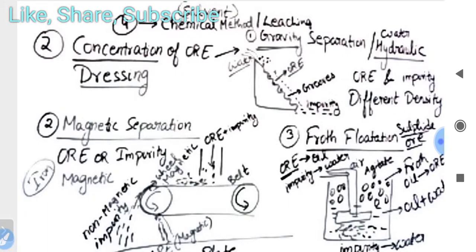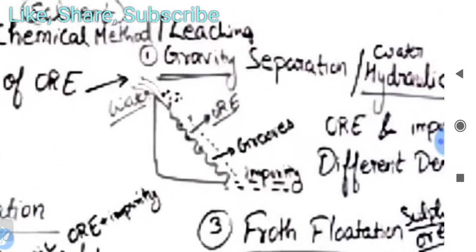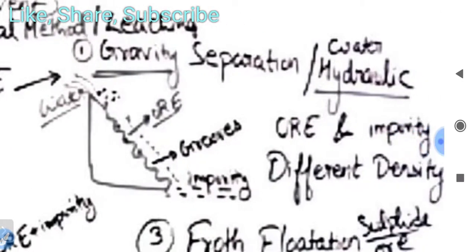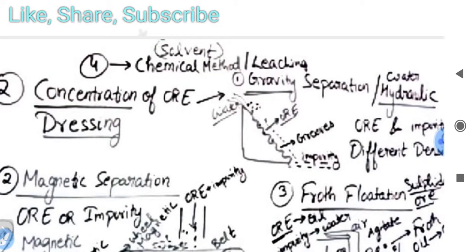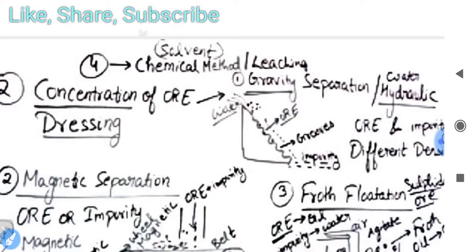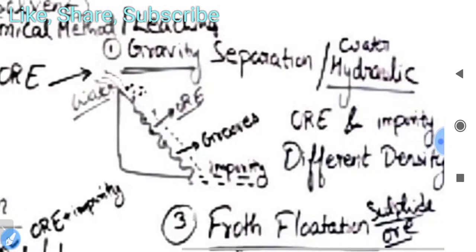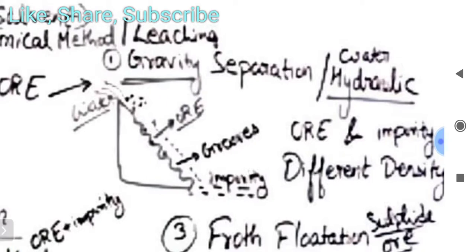Let's understand these steps through images. In the first step we do crushing. Now for the second method — concentration of ore, also called dressing of ore — there are different techniques. The first technique is gravity separation.